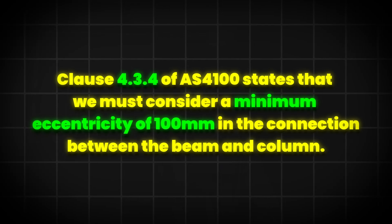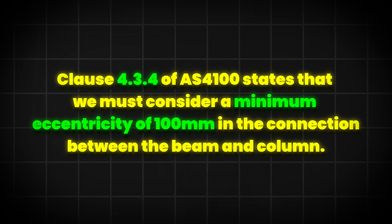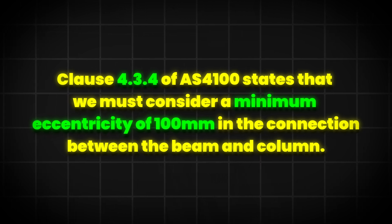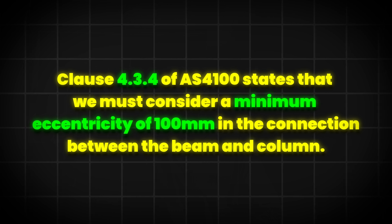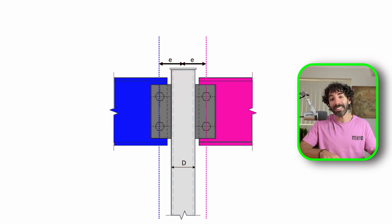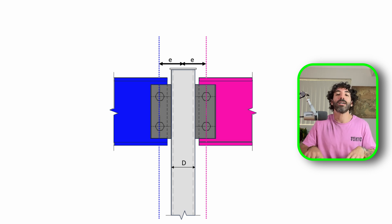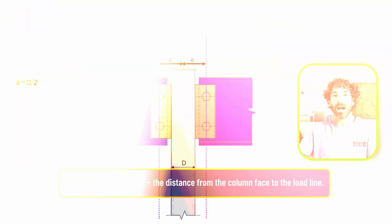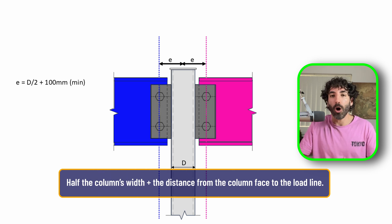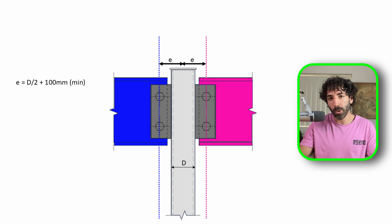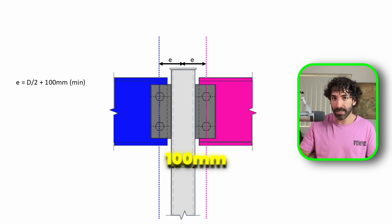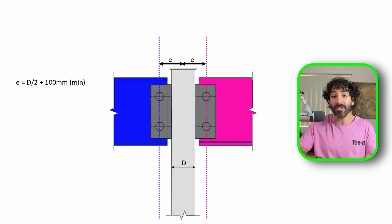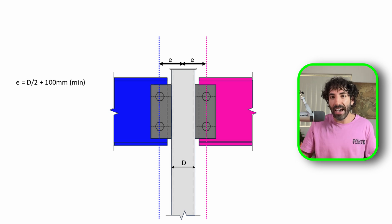Clause 4.3.4 of AS4100 states that we must consider a minimum eccentricity of 100 millimeters in the connection between the beam and the column. To determine the bending moment from eccentricity, we assume that the beam transfers its load to the column along a line of bolts. This means the eccentricity is calculated as half the column's width plus the distance from the column face to the load line — a minimum of 100 millimeters per the code, though a larger actual distance should be used if applicable.